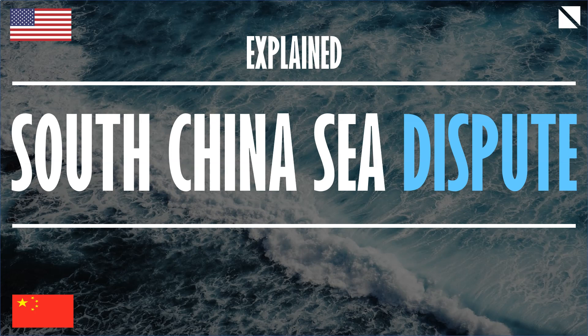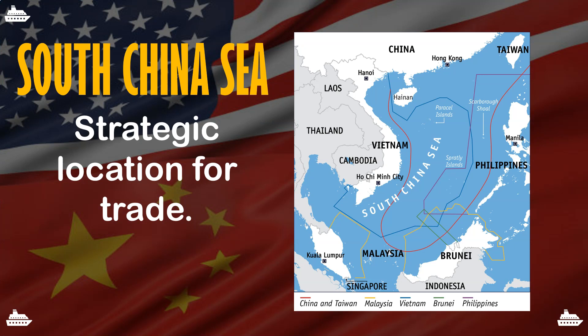Before we begin, it might be ideal for you to have an overview of this region. Why is it so important? Where is it located? The South China Sea is located in the southern and eastern part of Asia, and the major countries surrounding this region are China, Vietnam, Malaysia, Brunei, Philippines, and Taiwan.